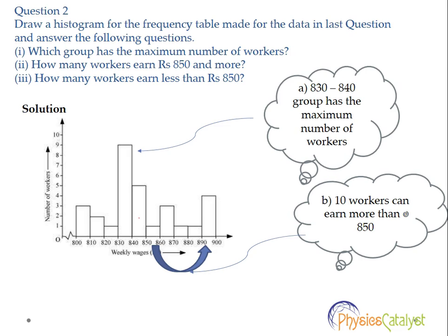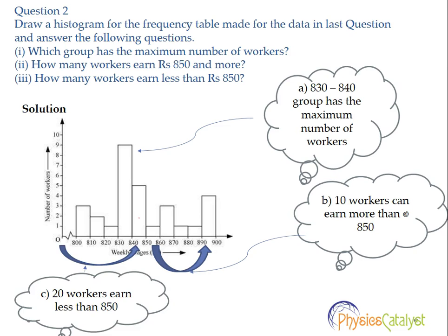If we count all those frequencies for workers earning 850 and more, we get 10 workers. For part three — how many workers earn less than rupees 850 — we look at all the bars below the point 850, meaning we sum the frequencies in all intervals from 800 to 850. Counting those gives us 20 workers who earn less than 850.